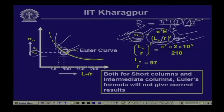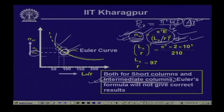In between the short column and long column states, we get a set of columns designated as intermediate columns. Intermediate columns may fail by a combination of yielding and buckling. Short columns fail by yielding or crushing; long columns fail by buckling. Intermediate columns fail by the combination of both and fall in a particular range between short and long columns. For intermediate columns, Euler's formula will not give the correct result.